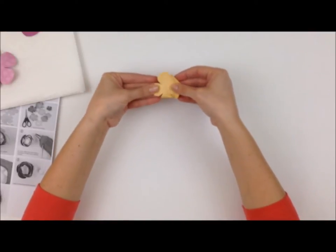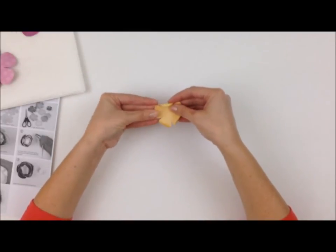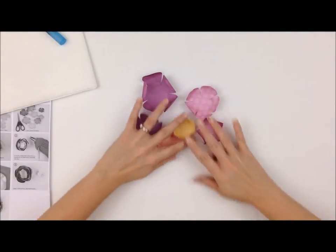So just curl each petal, work your way around the flower and what you're going to do is curl every flower like this. Set it aside to dry and when they're all done they look like this.